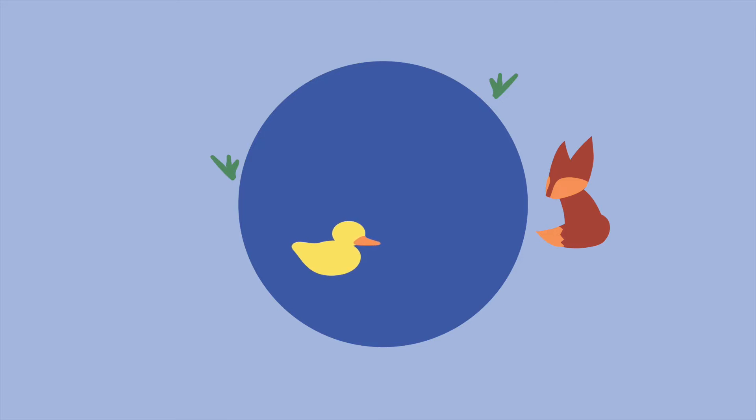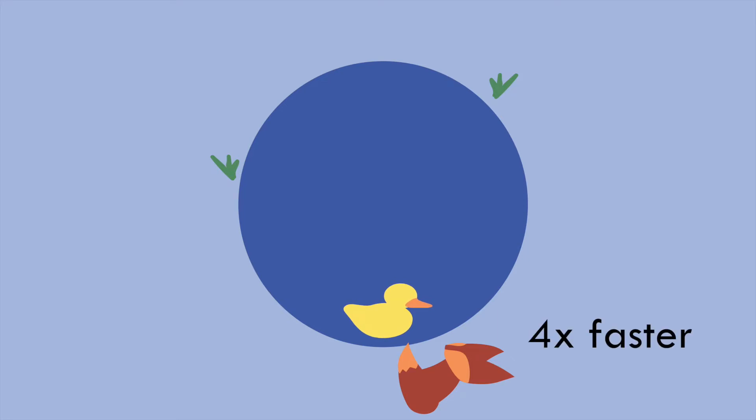As the duck begins to swim ashore so he can escape, the fox takes off at a sprint and circles the pond to meet him. The fox can run four times as fast as the duck can swim. Assuming that the duck escapes immediately upon reaching the shore if the fox isn't already there, is there a way for him to escape no matter where the fox begins?